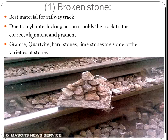The first type of ballast is broken stone, which is the best material for railway track. Due to its high interlocking action, it holds the track in correct alignment and gradient. Granite, quartzite, hard stones, and limestone are some of the varieties used. This type of broken stone ballast is used throughout the railway track.